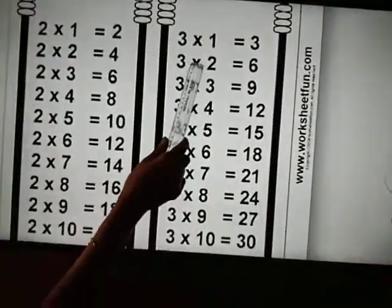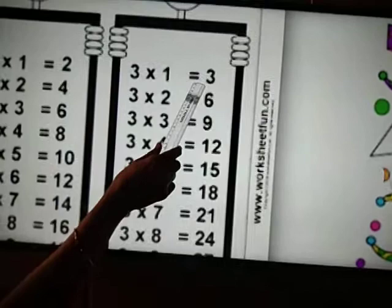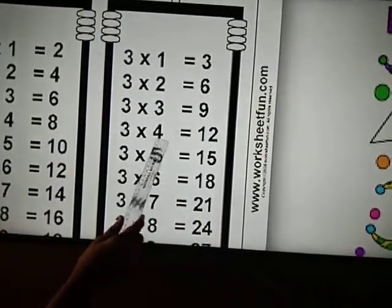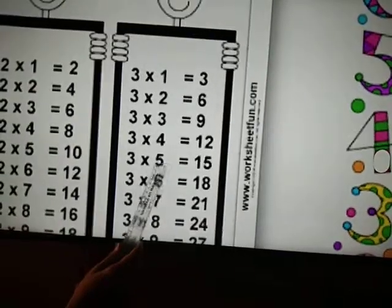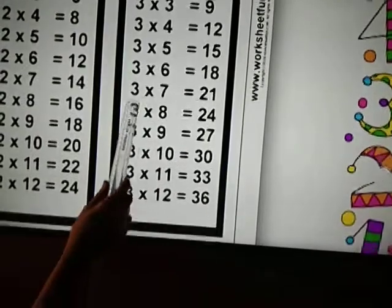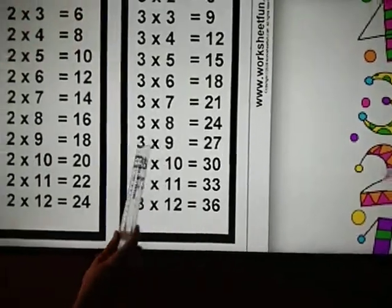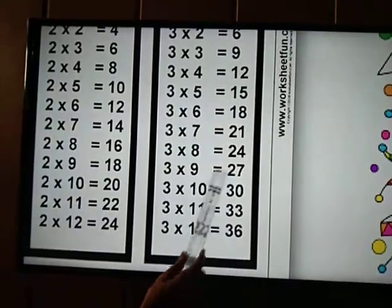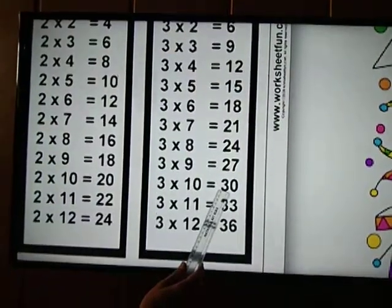Now table of 3. 3 1's are 3, 3 2's are 6, 3 3's are 9, 3 4's are 12, 3 5's are 15, 3 6's are 18, 3 7's are 21, 3 8's are 24, 3 9's are 27, 3 10's are 30.